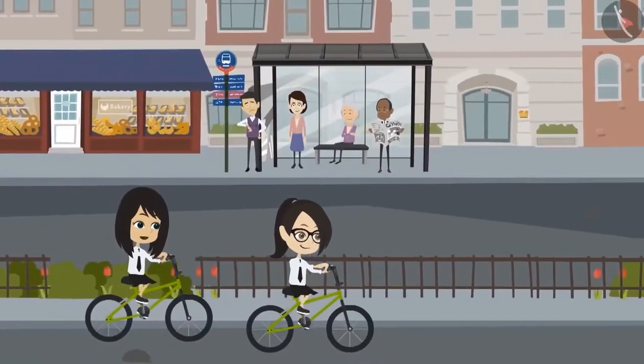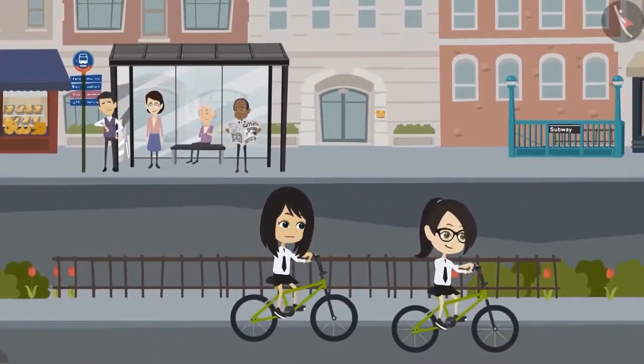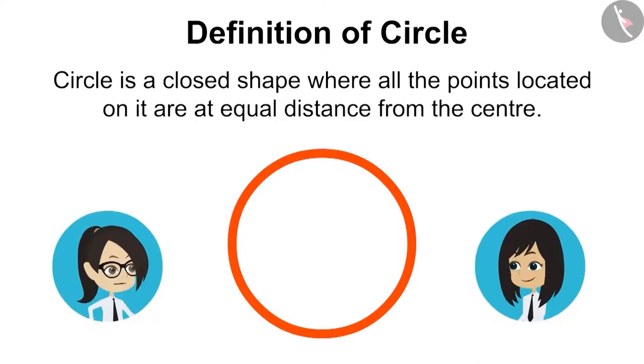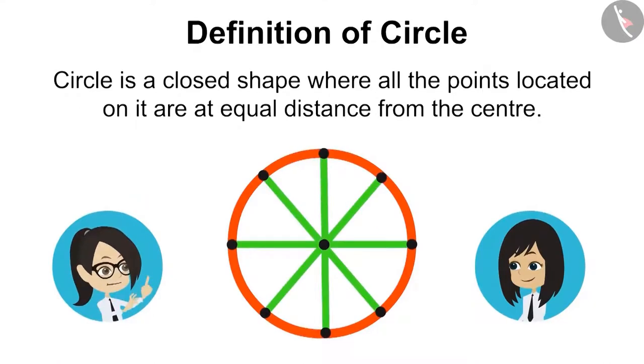What did sir tell us about circle yesterday? Yes, I remember it well. Circle is a closed shape where all the points located on it are at an equal distance from the center.